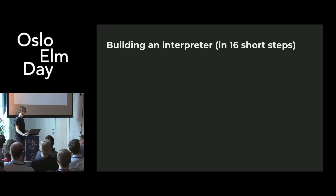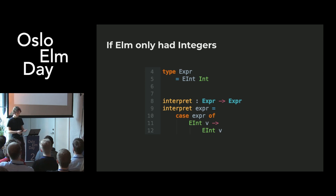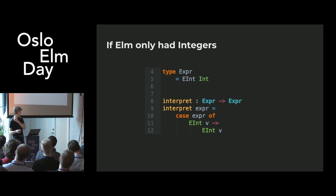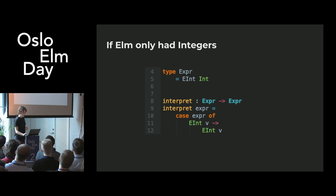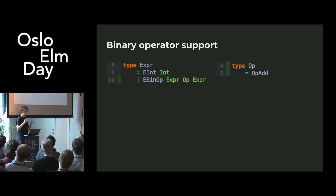I'm going to show you an interpreter in Elm for Elm. We'll start with just the pure skeleton — if Elm only had integers. We need a data structure to capture expressions, and then an interpret function that simplifies those expressions. But that's not enough — we need to do something useful. So, binary operators: if you think of infix operators, it's just an operator and two arguments on either side. Here's how the AST corresponds to Elm source code.